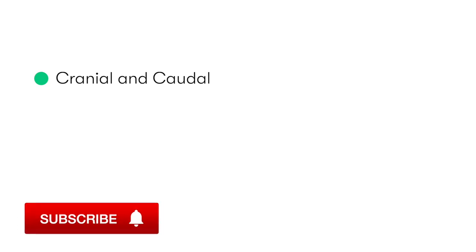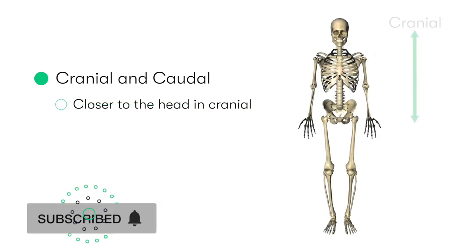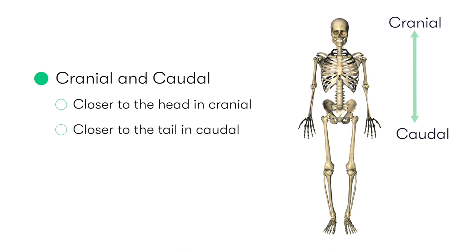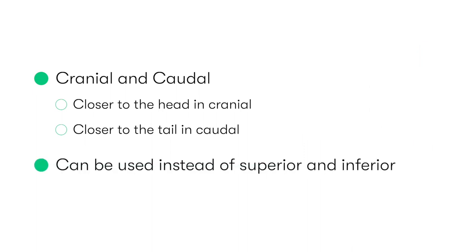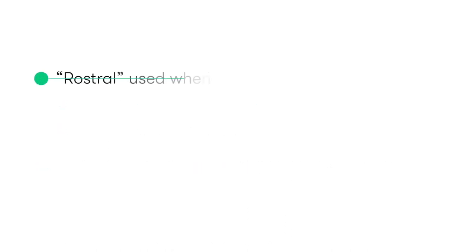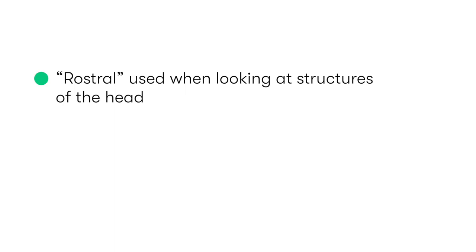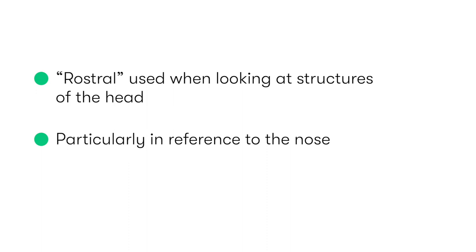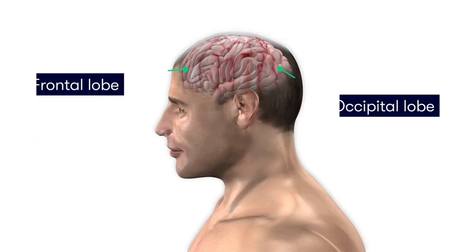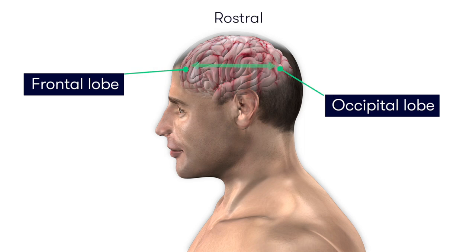Then we have the terms cranial and caudal: cranial refers to something closer to the head, and caudal to something closer to the tail. These can be used instead of superior and inferior, describing essentially the same thing. Another term, mainly used for structures of the head, is rostral, used in particular reference to the nose. For example, the frontal lobe of the brain is rostral to the occipital lobe.